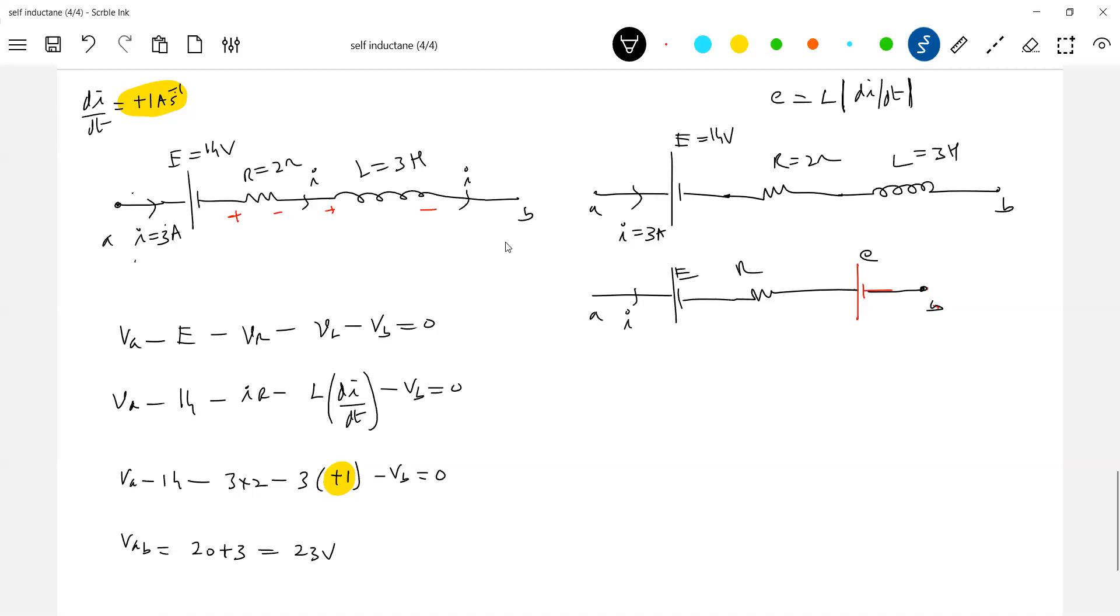But again, don't put sign. Already you have taken care of sign by replacing with a cell. So E equal to EMF induced should be L mod of Di by DT. This is the formula. Let's write the equation. Plus minus. Don't give again sign for this. Because you have replaced cell - for cell we should not give any polarity. From the loop equation: VA minus E, I into R, minus E, minus VB. This is 14, I into R is 6. This should be L mod of Di by DT. L is 3.